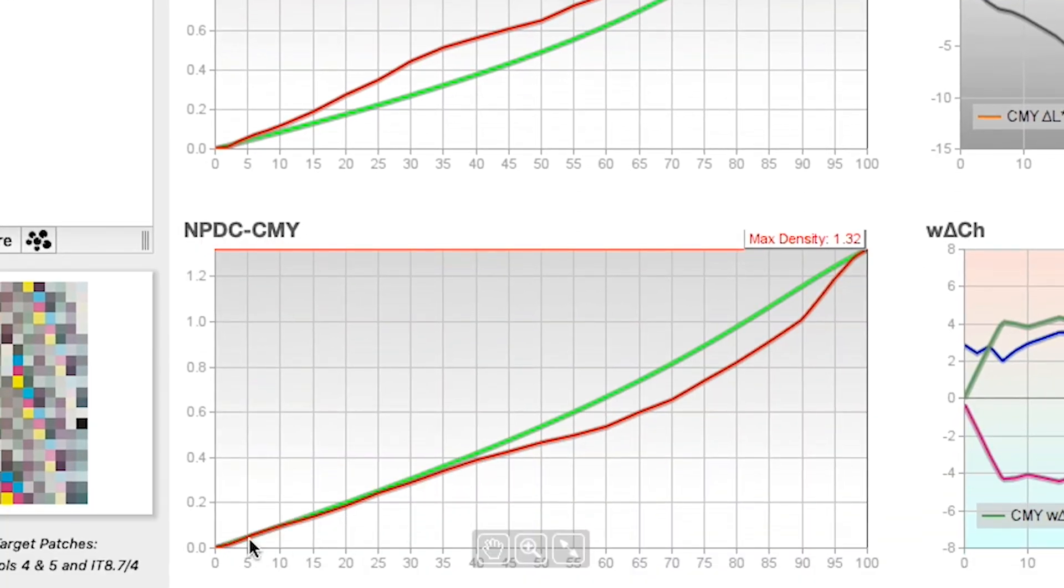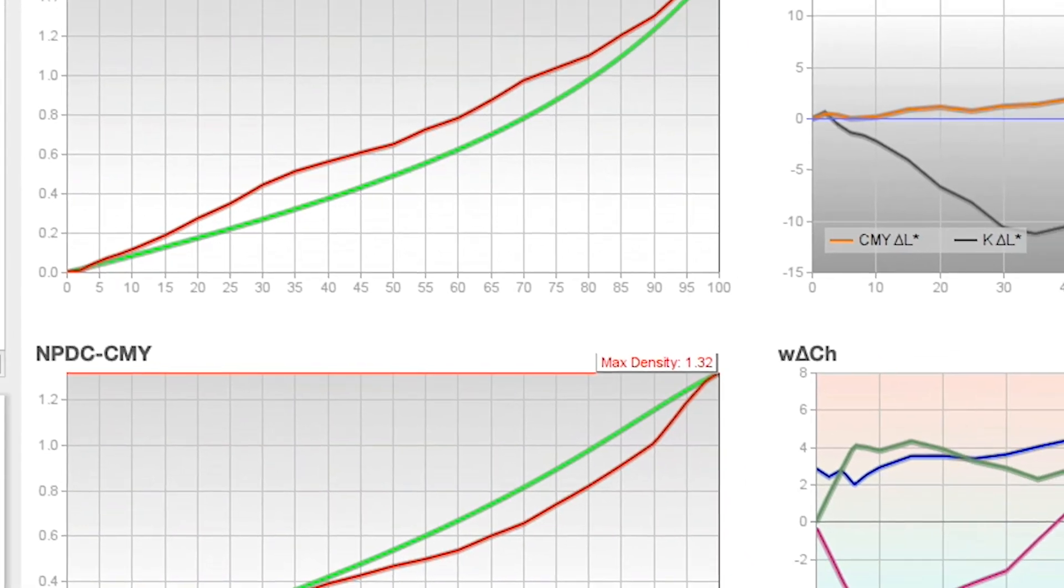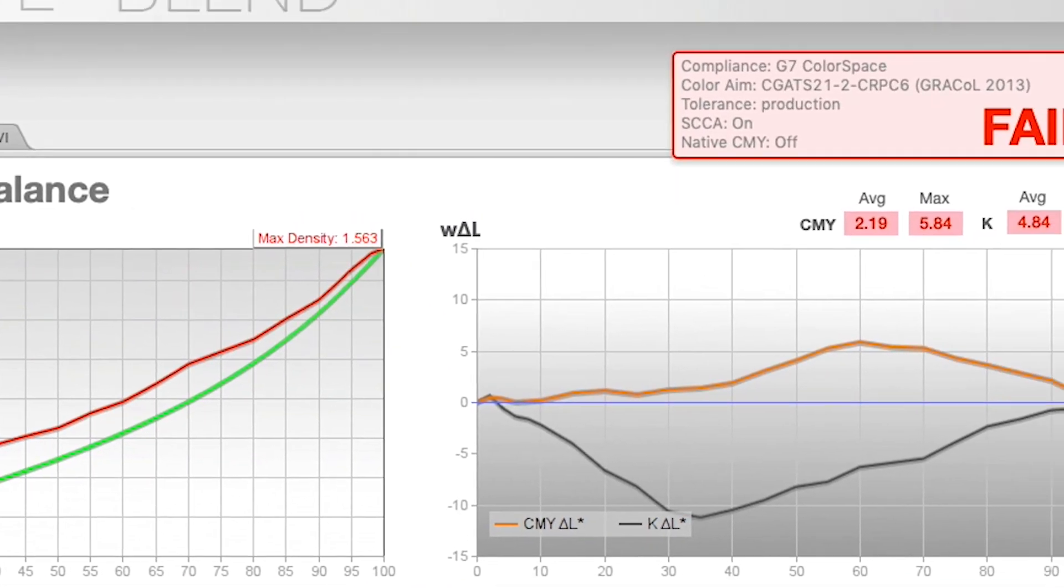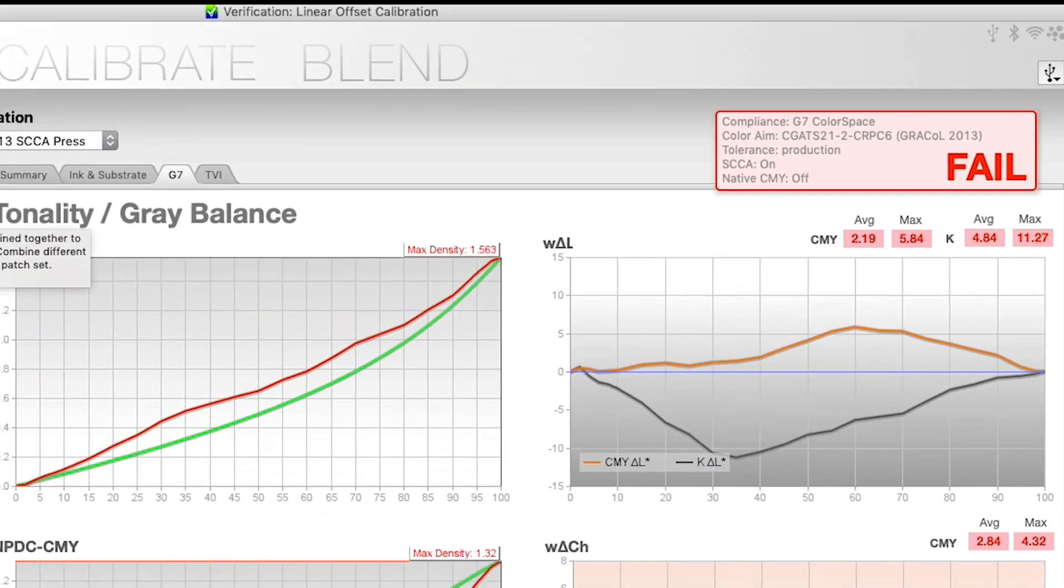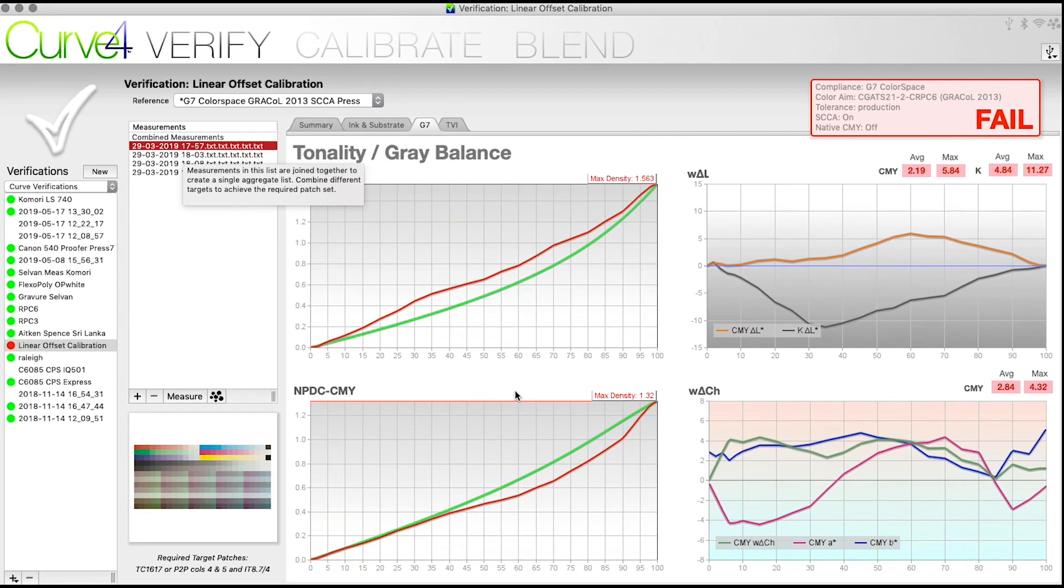Then down here the NPDC curve for the CMY, I'm pretty good up into about 30 percent, then I start to get considerably lighter as I go from 30 all the way up to 100 percent. So this is a fail and these were taken from a P2P51. Just to show you the two scales that I mentioned earlier, let me show you what those look like.